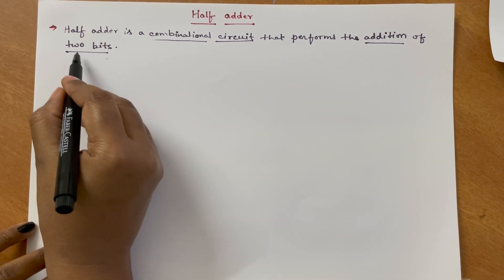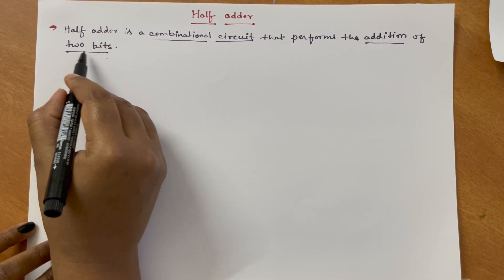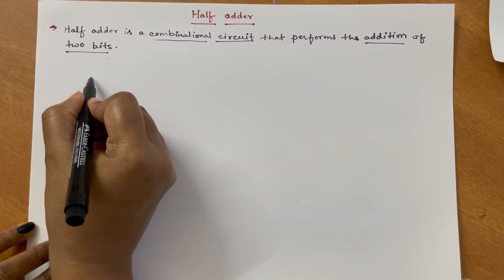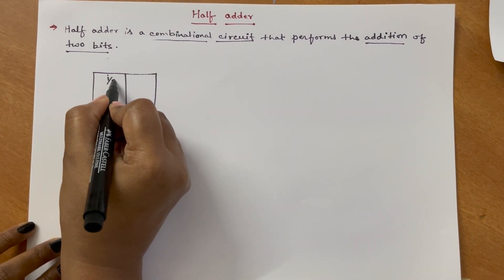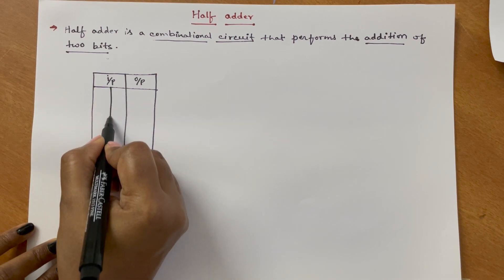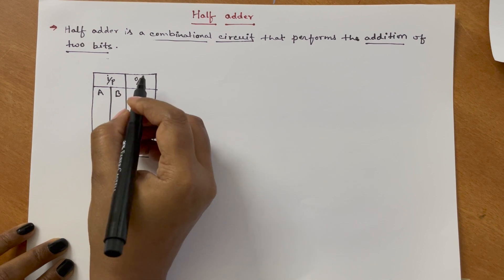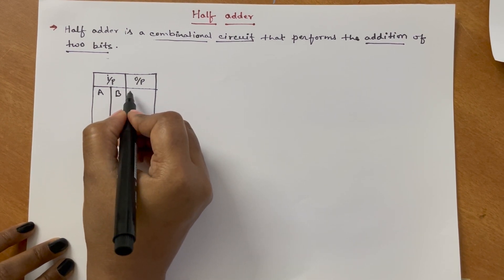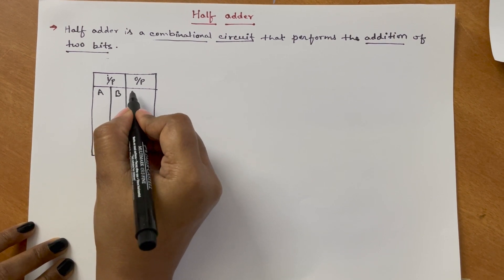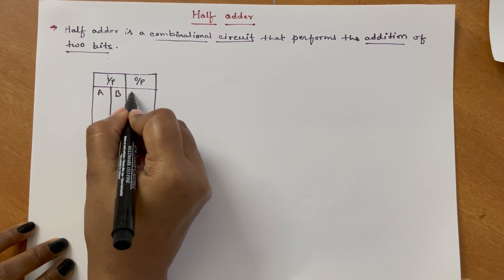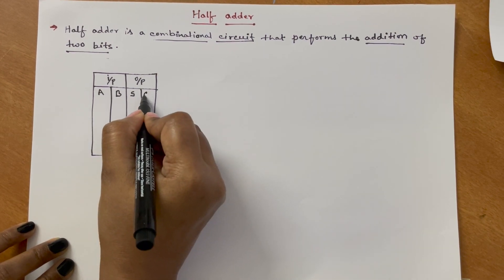As the definition says, it adds 2 bits. While writing the truth table there will be 2 inputs. We name them A and B. And there will be 2 outputs for this addition — that will be sum and carry output. For sum we write S, and for carry output we write Cout.